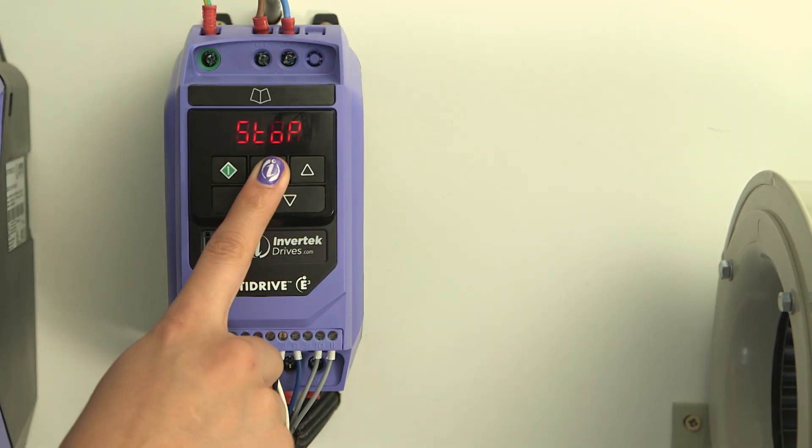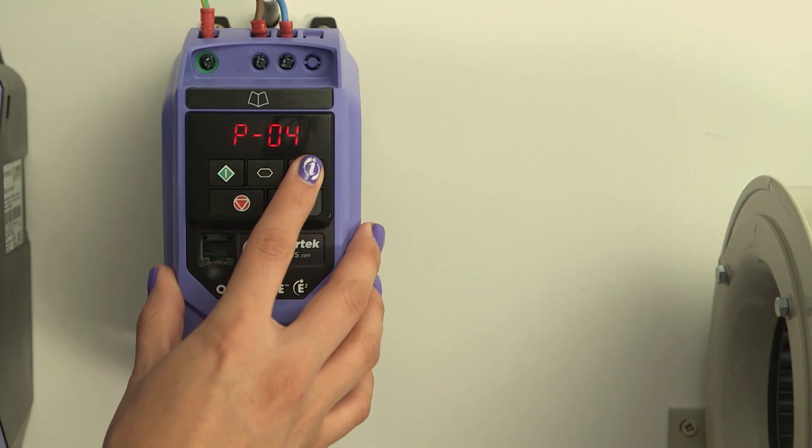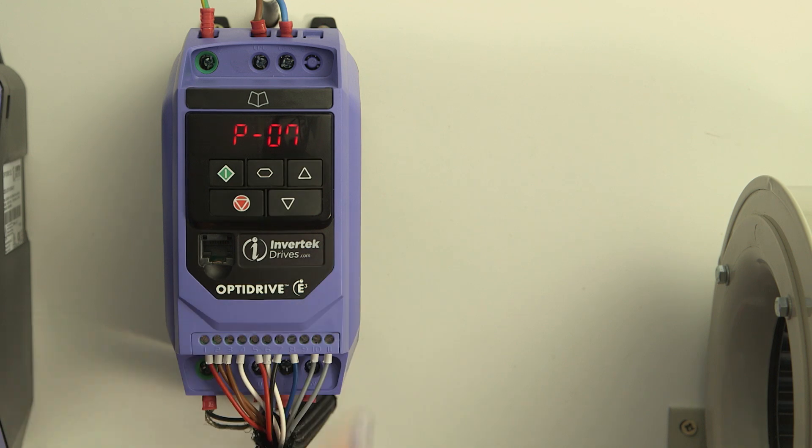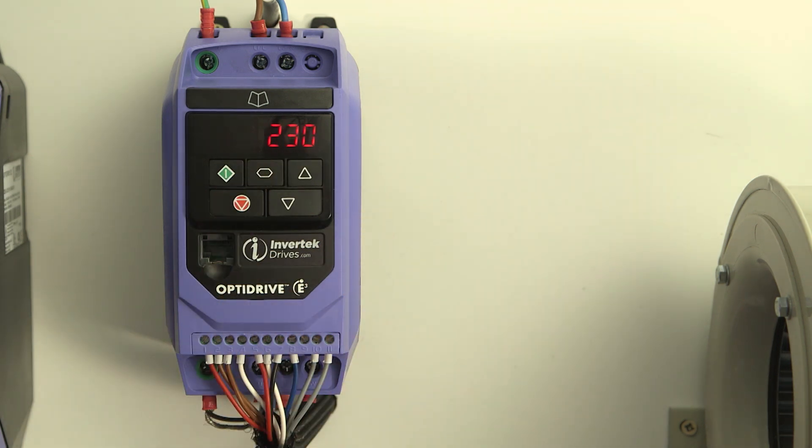Press navigate for a couple of seconds to access the parameters. Scroll with up or down arrows to parameter P7, the motor voltage. Press navigate again to access the parameter value.